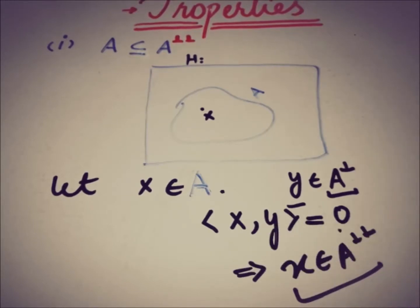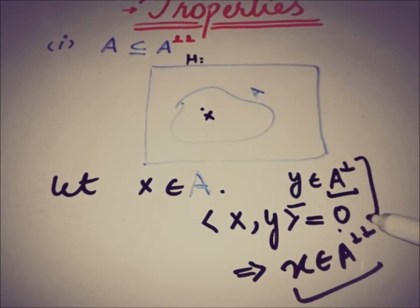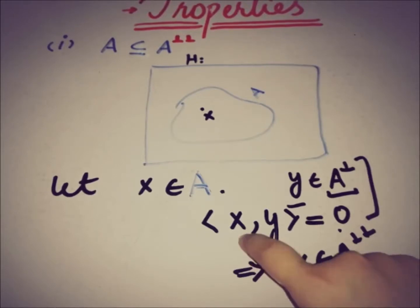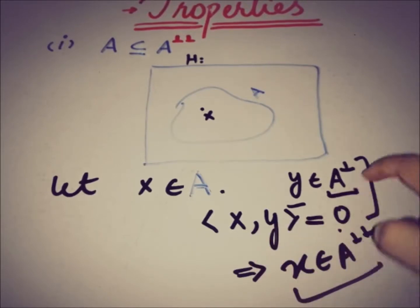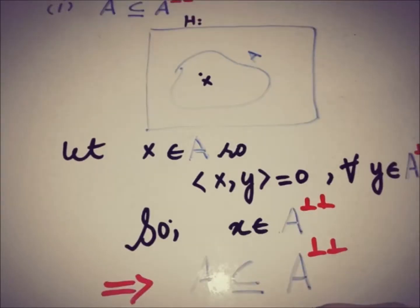If X is a member of the subset A, then by definition the inner product of X with every element of A annihilator is 0, which means X belongs to the double annihilator. So this implies that A is a subset of the double annihilator.